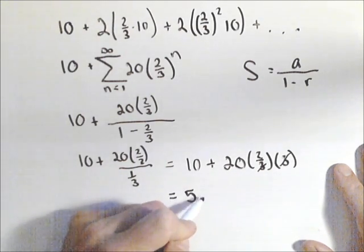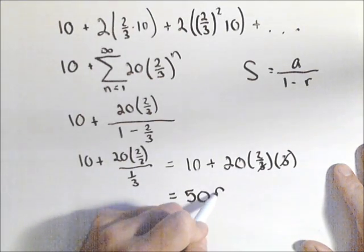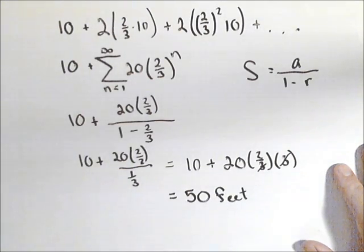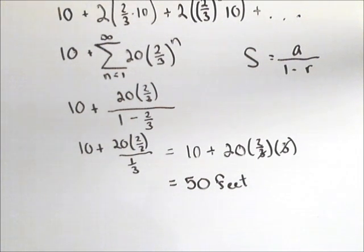Or when all is said and done, the ball going up and down is going to travel a total of 50 feet. So that's how we can apply an infinite geometric series to solve this problem.